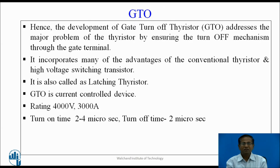Hence, the development of gate turnoff thyristor addresses the major problem of the thyristor by ensuring the turnoff mechanism through the gate terminal. It incorporates the best features of conventional thyristor and high voltage switching transistor. It is also called a latching thyristor. GTO is a current control device. The ratings available in the market are up to 4000 volt and 3000 ampere.